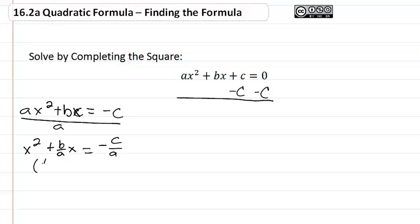So now we take one-half times our b over a. That means we get b over 2a quantity squared is equal to our c. So that means c equals b squared all over 4a squared.